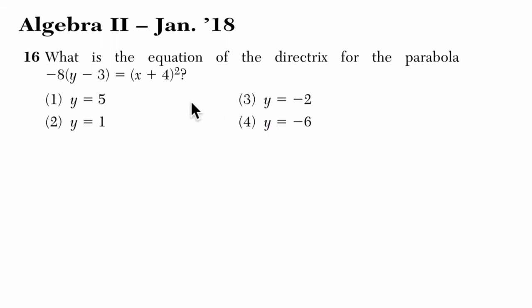Alright, so what do I notice? I notice that the x binomial is squared, so this is a vertical parabola. I also notice that this term is negative, so it's going to open downward.